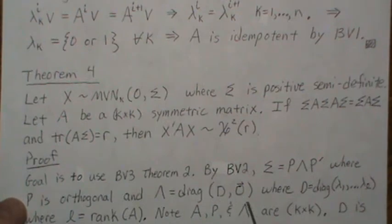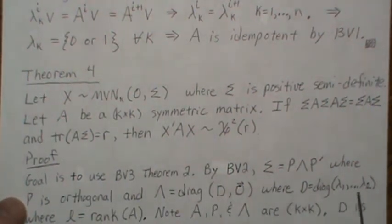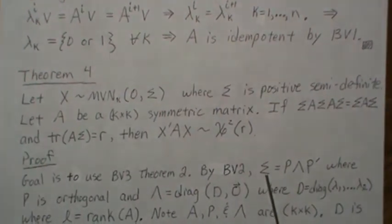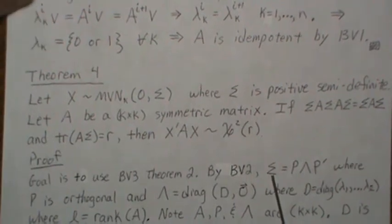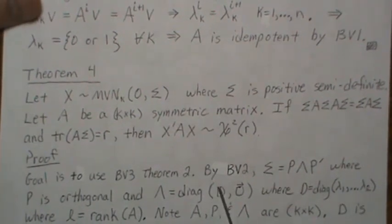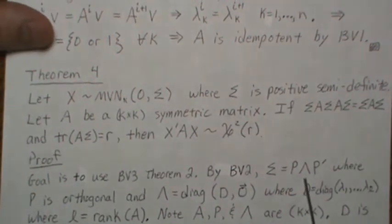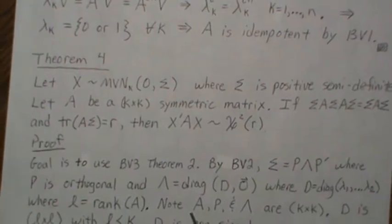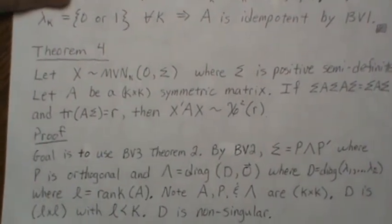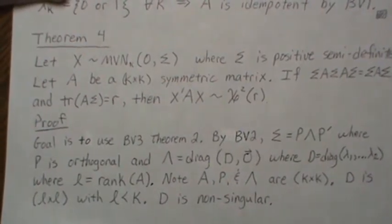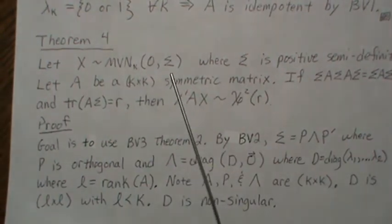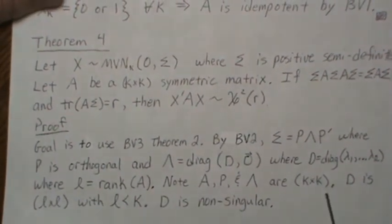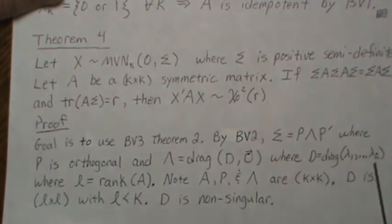D is a diagonal matrix with the positive eigenvalues. Since sigma is positive semi-definite, all eigenvalues are zero or positive. Assuming sigma has rank l, where l is strictly less than k — if l equals k then sigma is positive definite and we're back in the Theorem 2 setting. Note that D is non-singular since all entries are positive and it's diagonal.